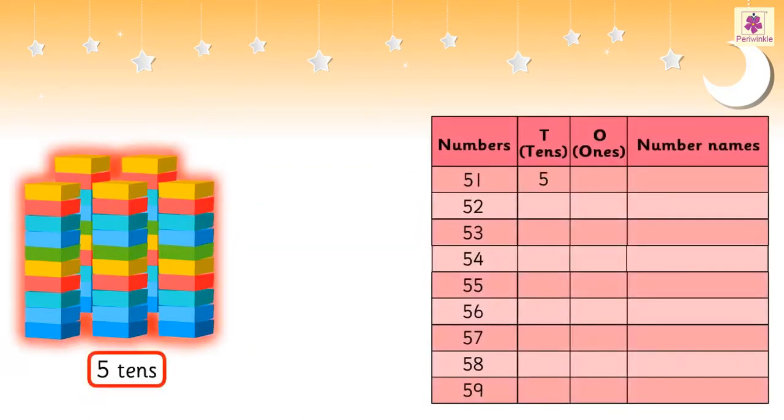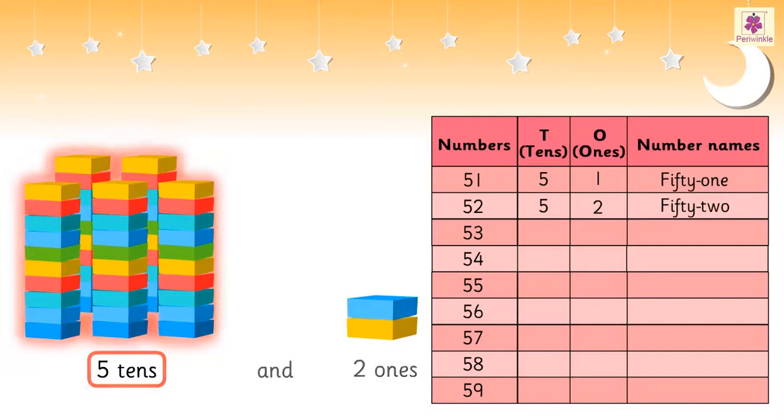5 tens and 1 one is 51. 5 tens and 2 ones is 52. 5 tens and 3 ones is 53. 5 tens and 4 ones is 54.